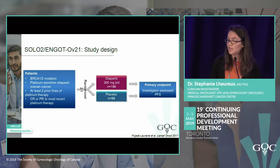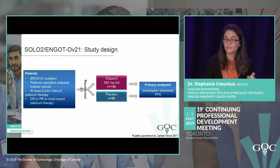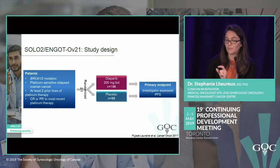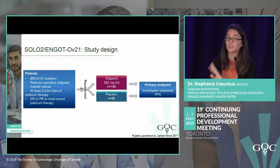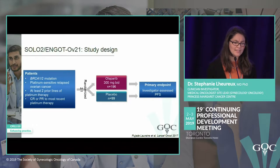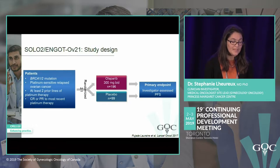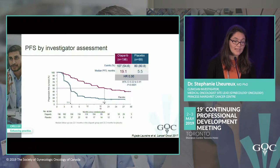Olaparib changed from capsules to tablets because initially it required 8 capsules in the morning and 8 at night, which was a lot. The tablet formulation requires only 2 tablets morning and night, which is much simpler for patients, especially in the maintenance setting where we want compliance to be as high as possible.